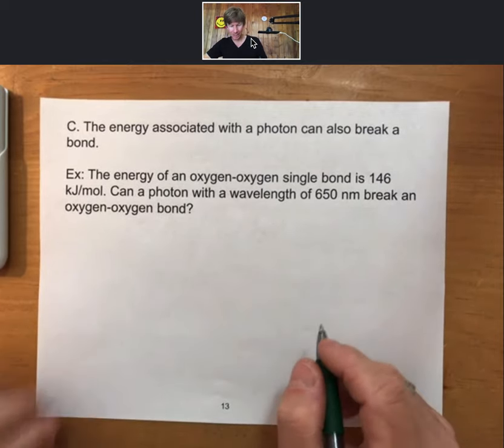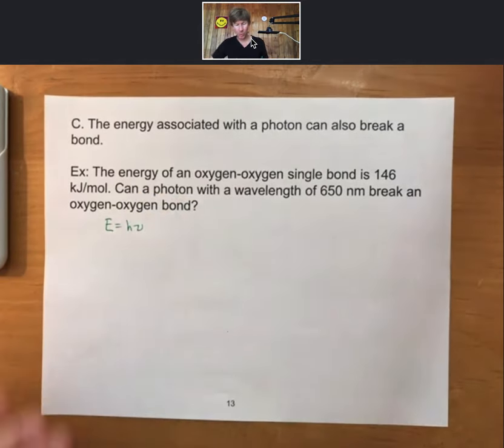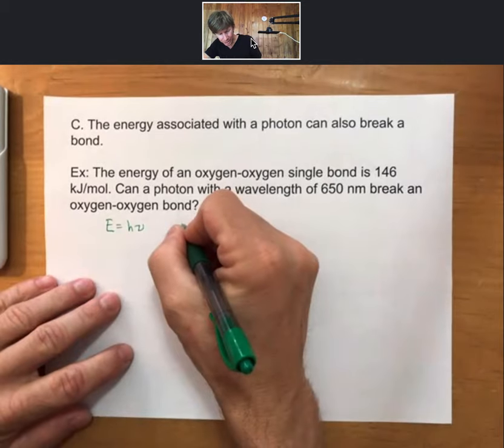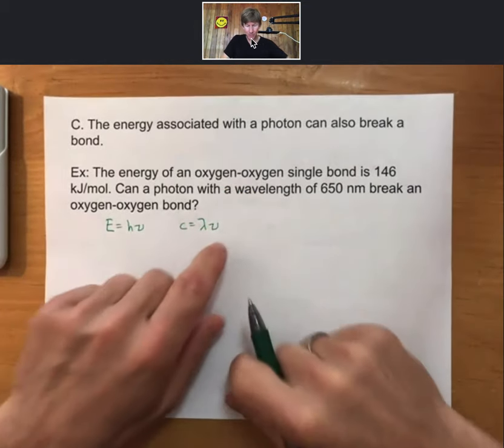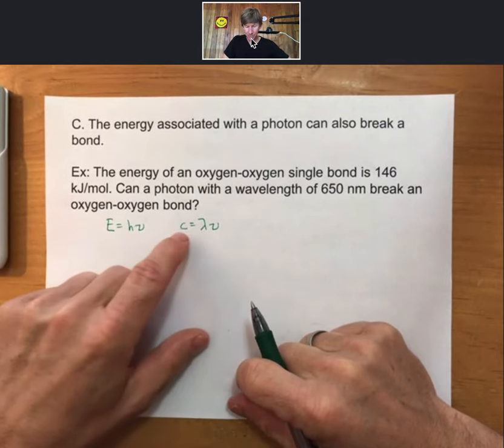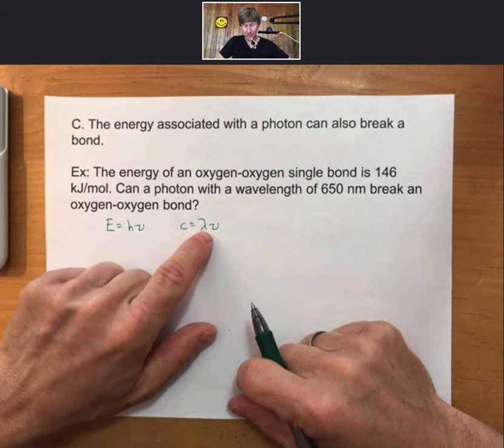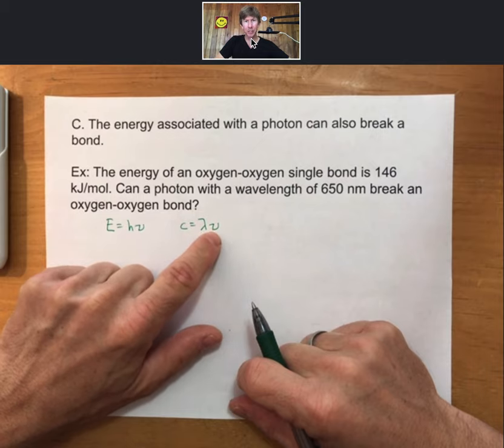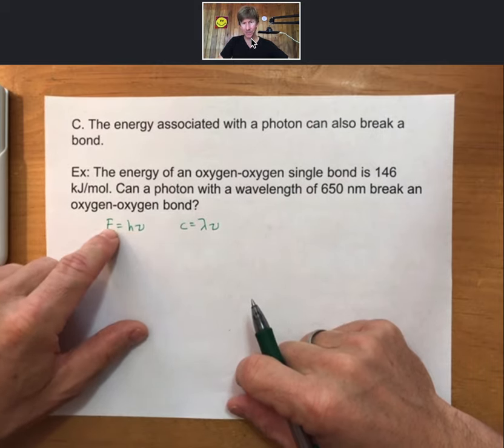Here's how we're going to approach this. We're going to have to find out what's the energy of this photon. We've been given wavelength. So we have wavelength, we need energy. You can do it in two steps, by taking the wavelength and the speed of light, solving for the frequency, plugging that frequency into the energy equation. Or you can combine these two.